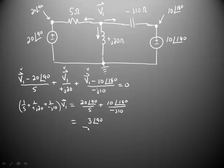We'll divide that by the coefficient of V1 on the left hand side, one-fifth, plus one over plus J20, plus one over minus J10, and when we're done, that should be equal to V1 Phasor.